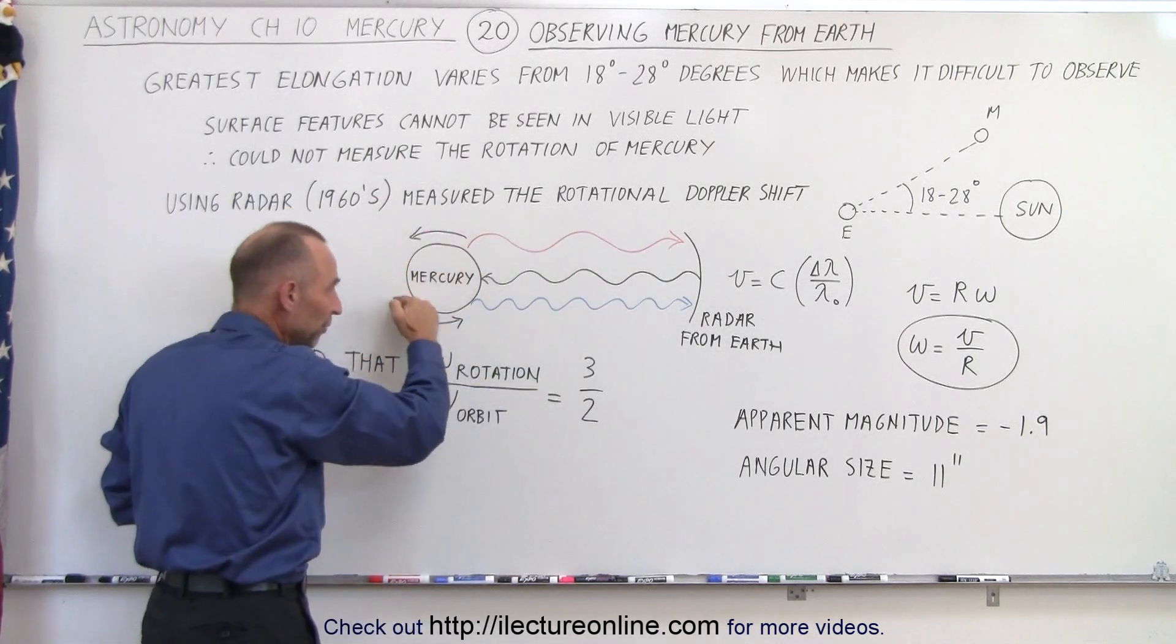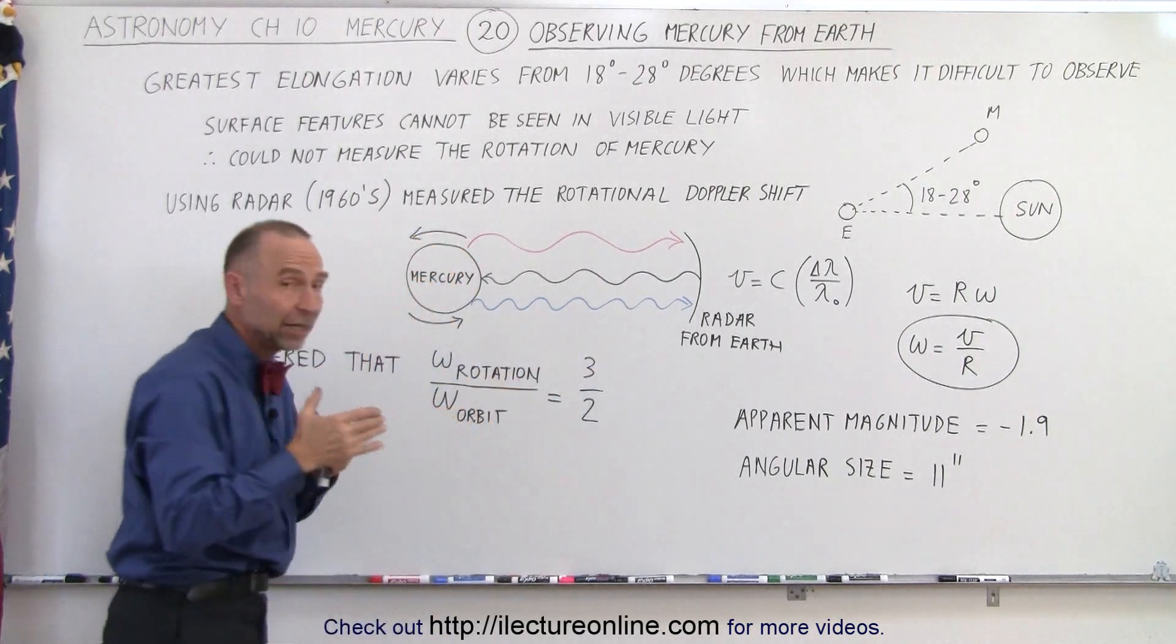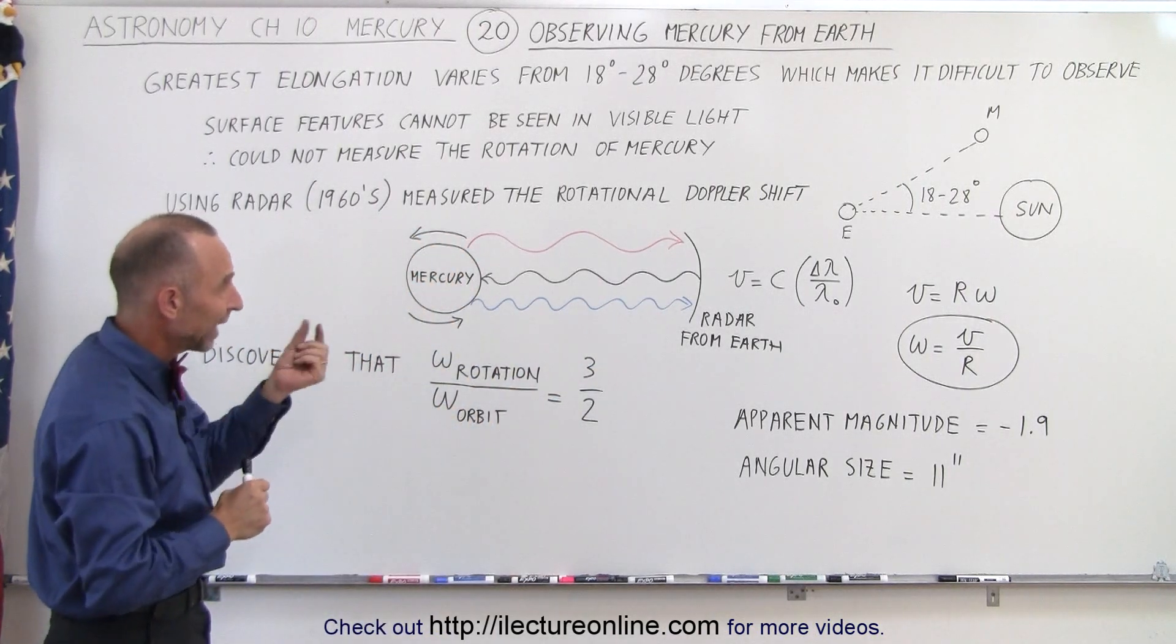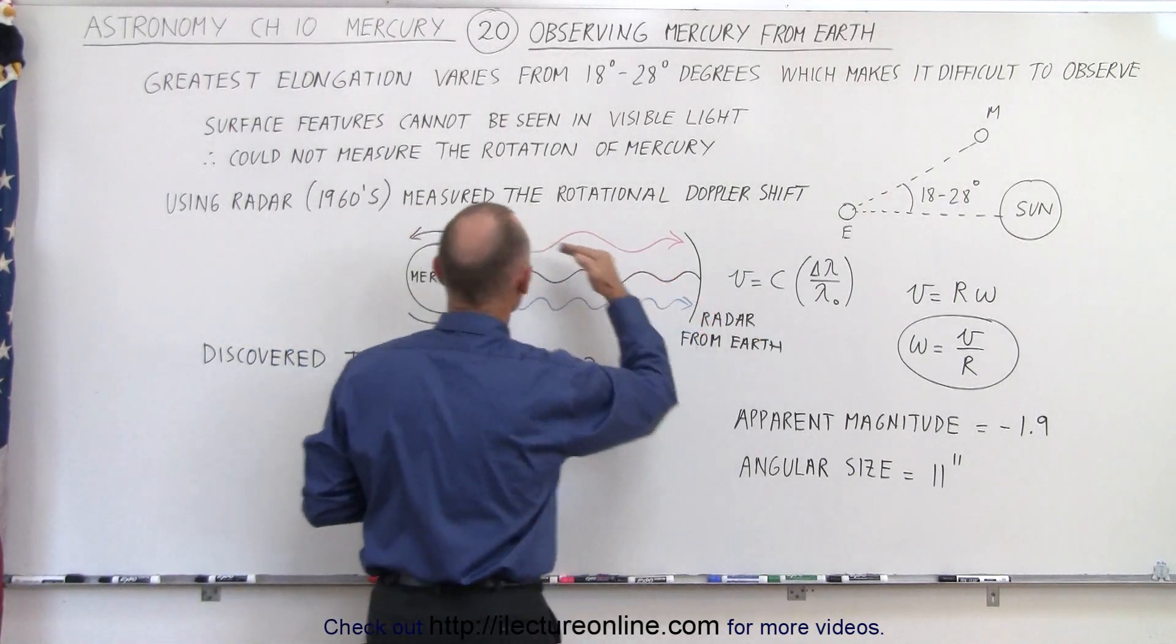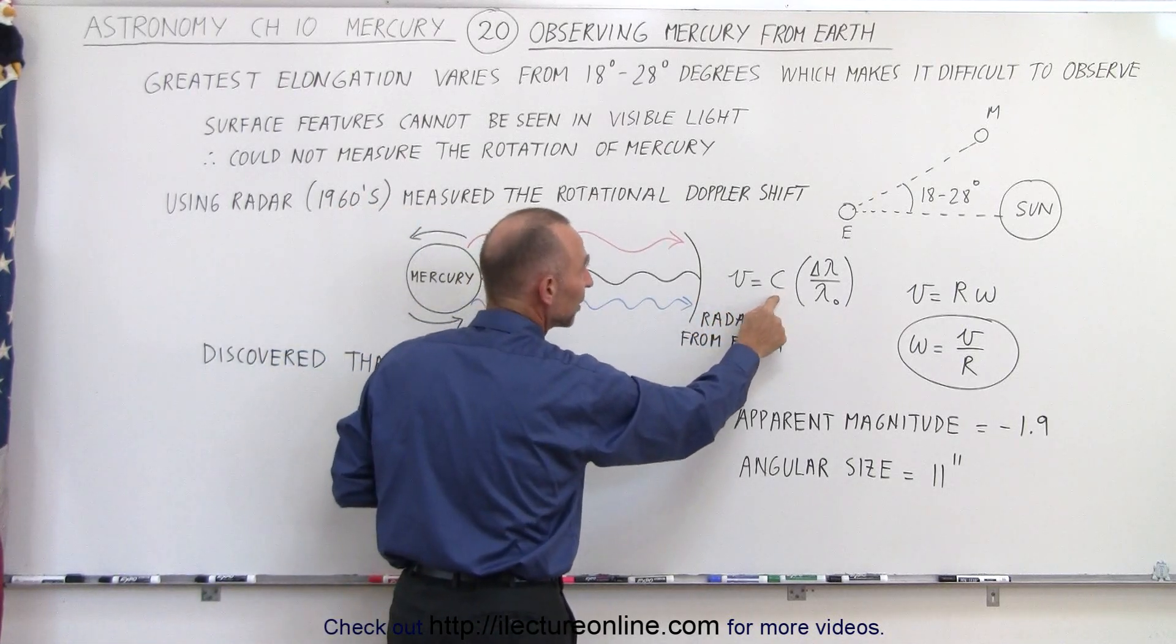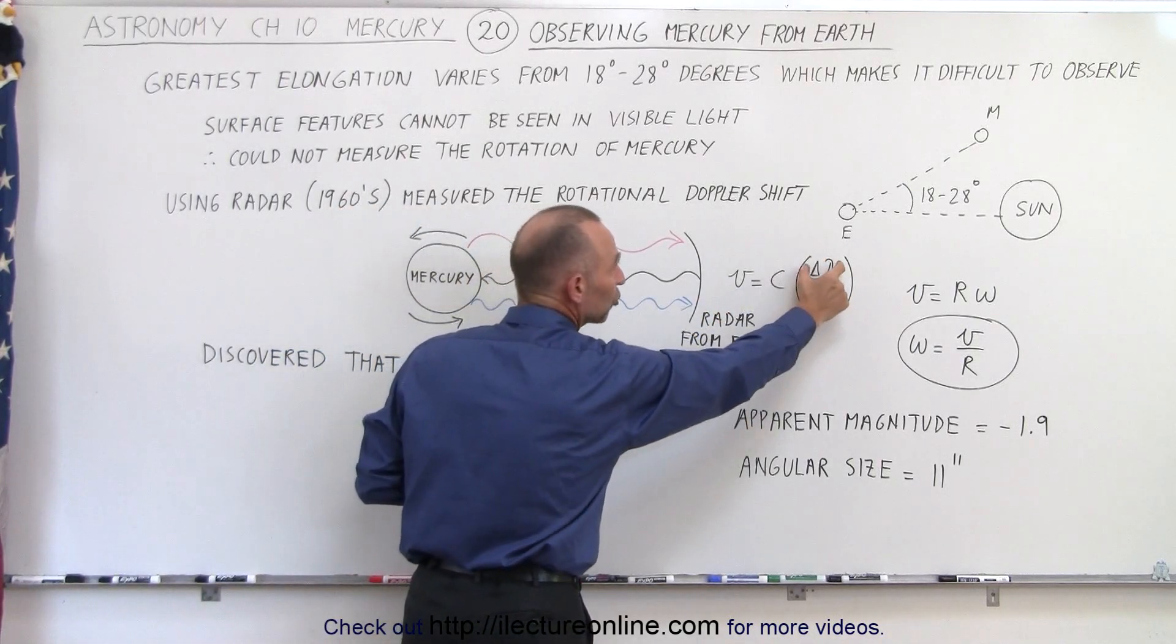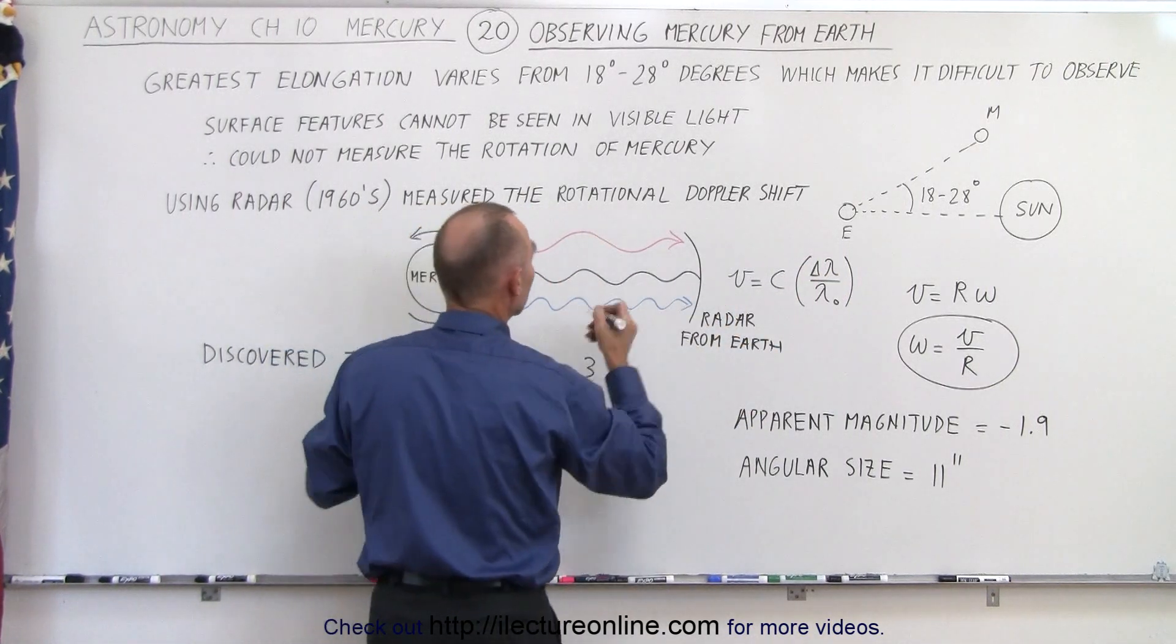Here, the surface will be moving towards the Earth, and therefore the radar beams being reflected back from the surface will be blue-shifted. That shift can be measured, and from that we can calculate the velocity of the surface of the planet, in terms of the speed of light, and the ratio of the change in the wavelength divided by the original wavelength that was sent from the radar from the Earth.